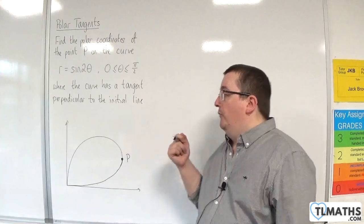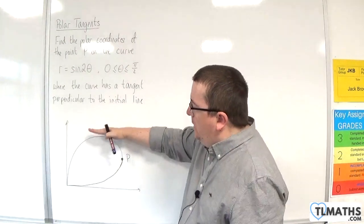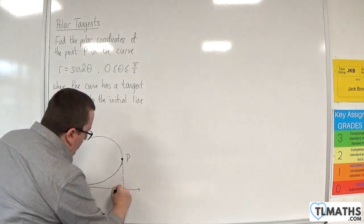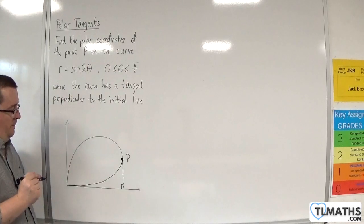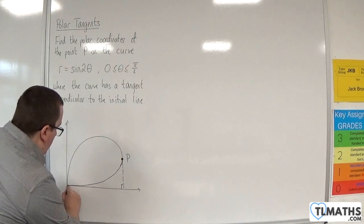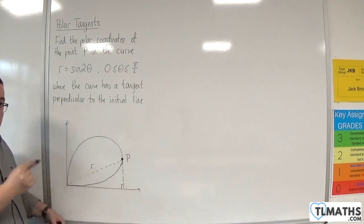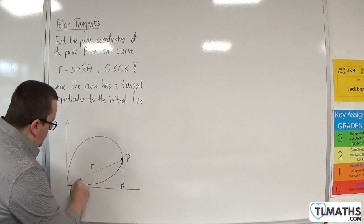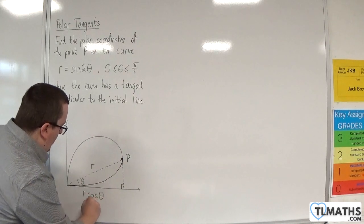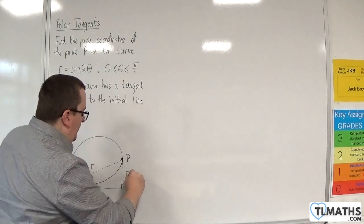All the problems we've looked at so far have been looking at tangents that are parallel to the initial line. So this time, P is at a point where it is perpendicular — it makes a right angle with the initial line. We can think of point P as having Cartesian coordinates, with X equal to R cosθ and Y equal to R sinθ.